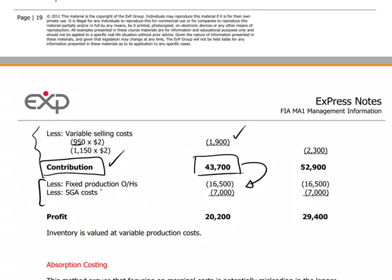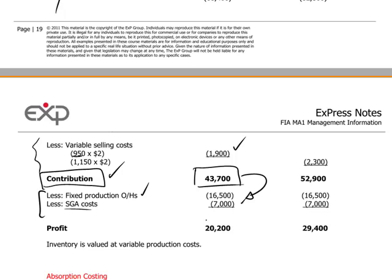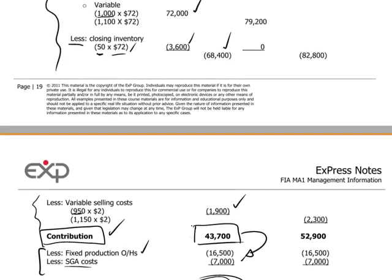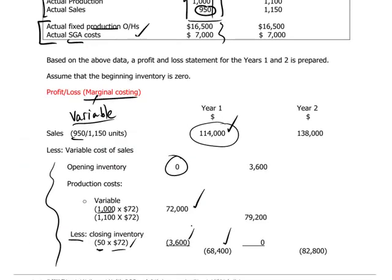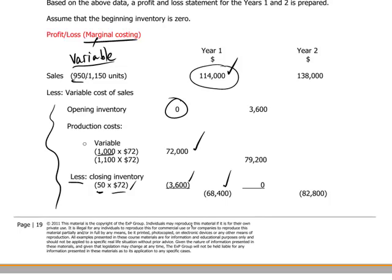We take the full amount of the actual fixed production overheads incurred, $16,500, plus the selling, general, and administrative costs, which are also fixed in nature, giving us a profit of $20,200. To take the story forward into the second year, pause for a moment and follow the same logic through year two.